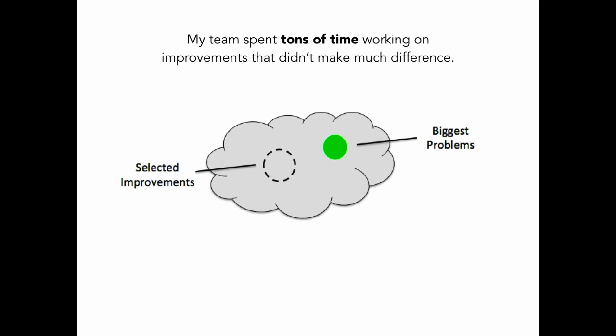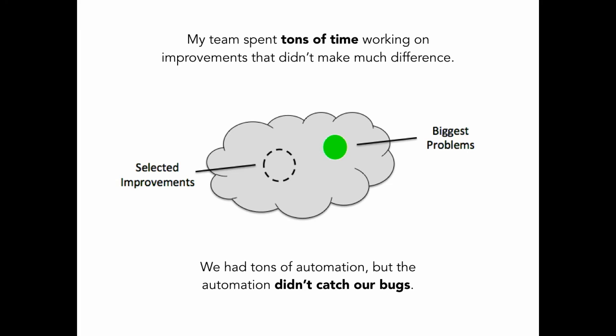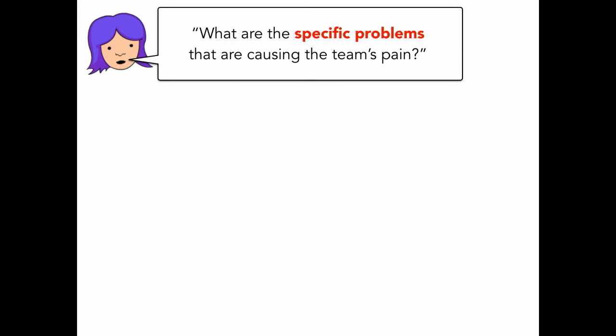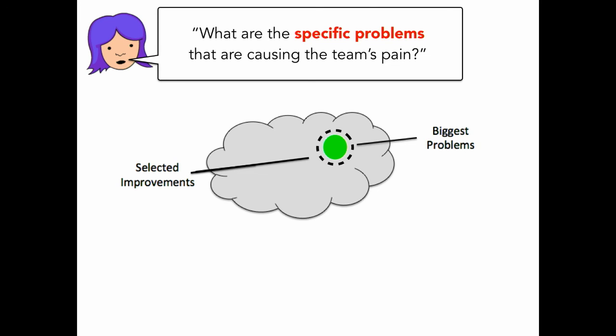In my project, we ended up spending tons of time working on improvements that didn't make much difference for almost a year. We had tons of automation, but the automation didn't catch our bugs. We had well-modularized code, but it was still extremely time-consuming to troubleshoot the defects. And then we started asking: what are the specific problems that are causing the team's pain? And that's when everything changed, and we were finally able to turn the project around.